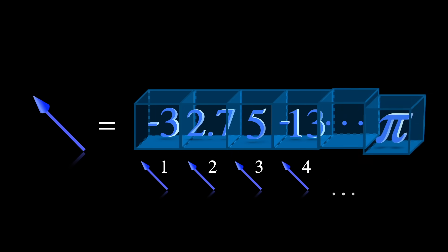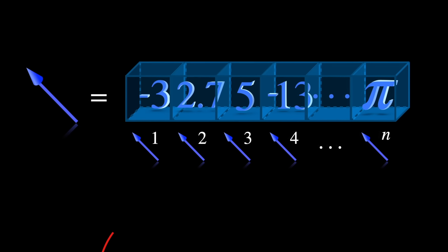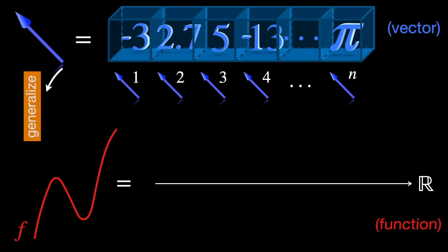But Sophia will be the one to tell you guys about it. To understand this shift, think of a vector as a discrete list of numbers, like a box with n values. A function, on the other hand, is like an infinite list of numbers, one for each point on a continuous interval.